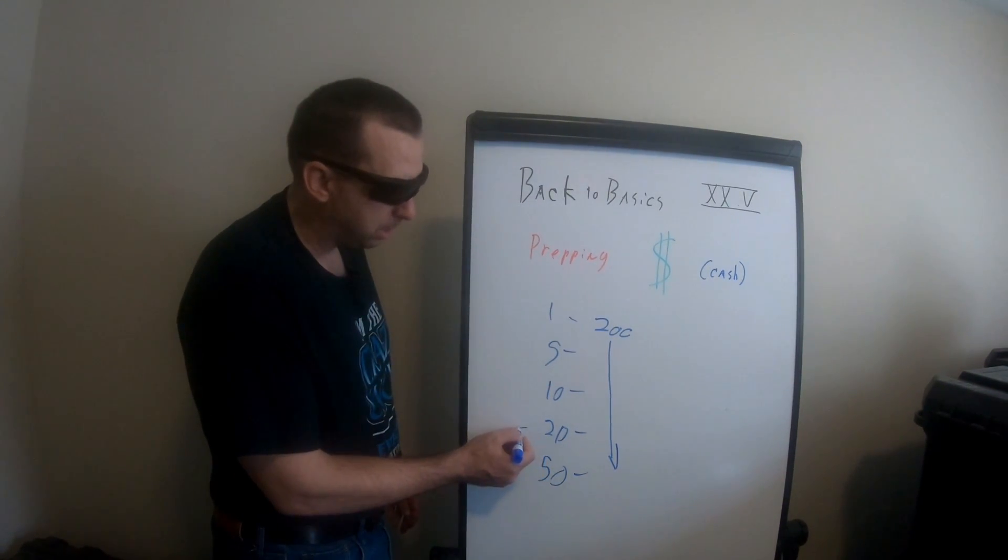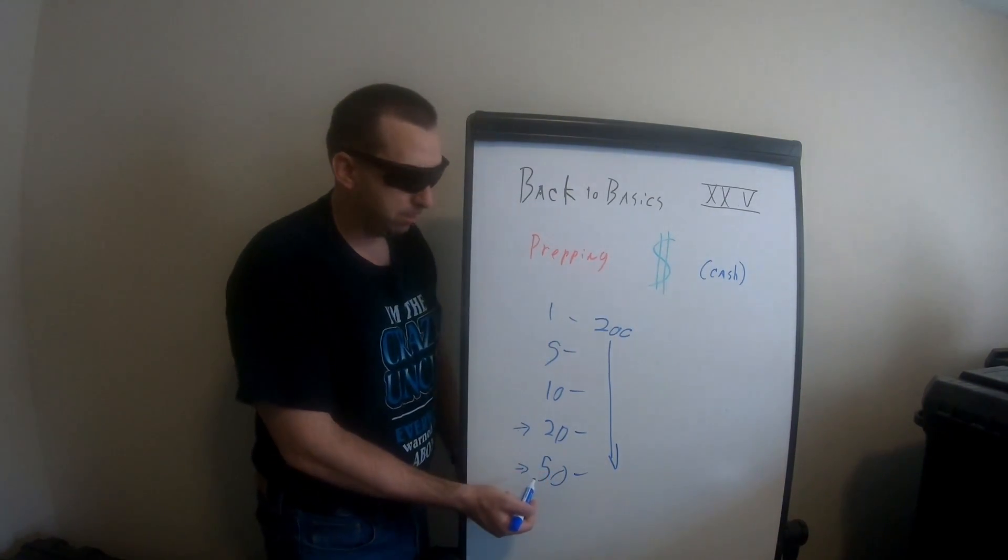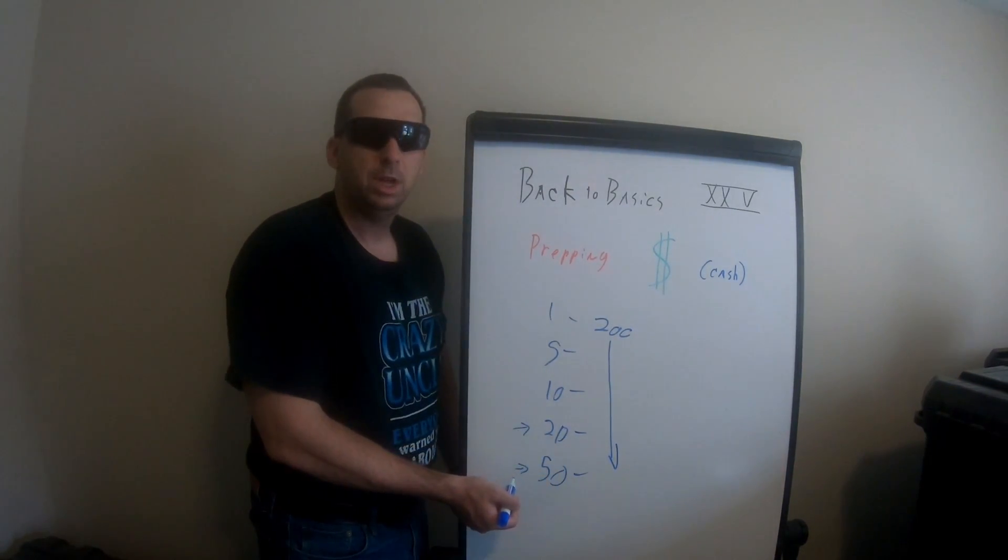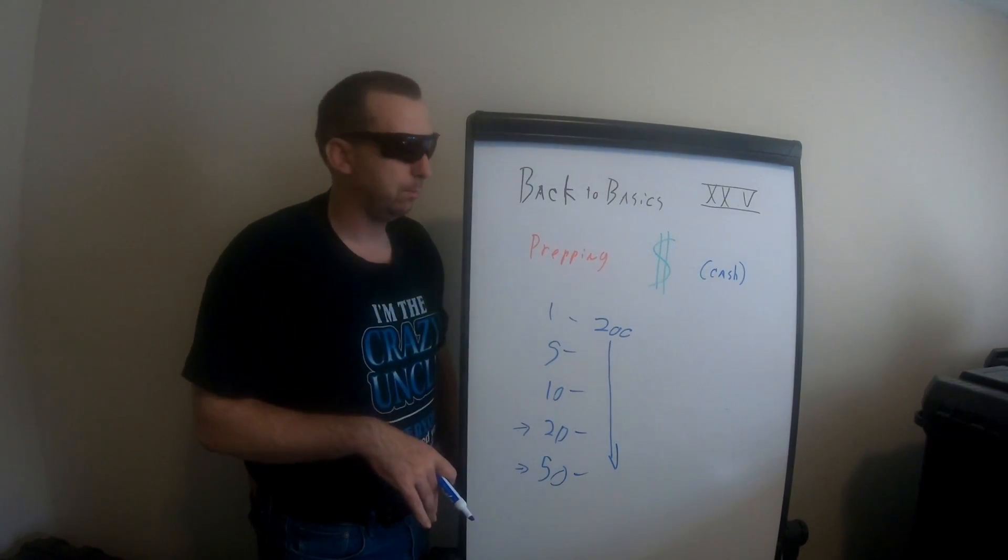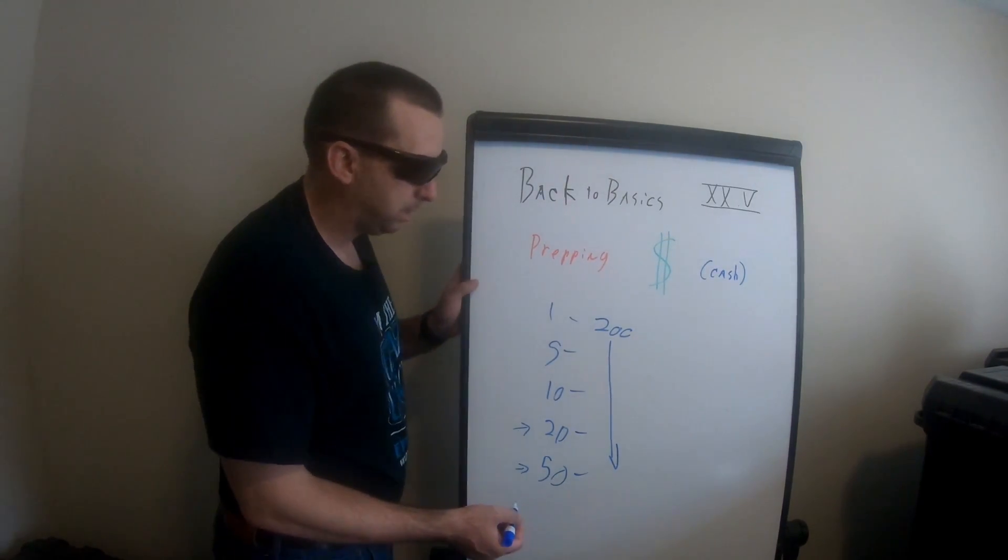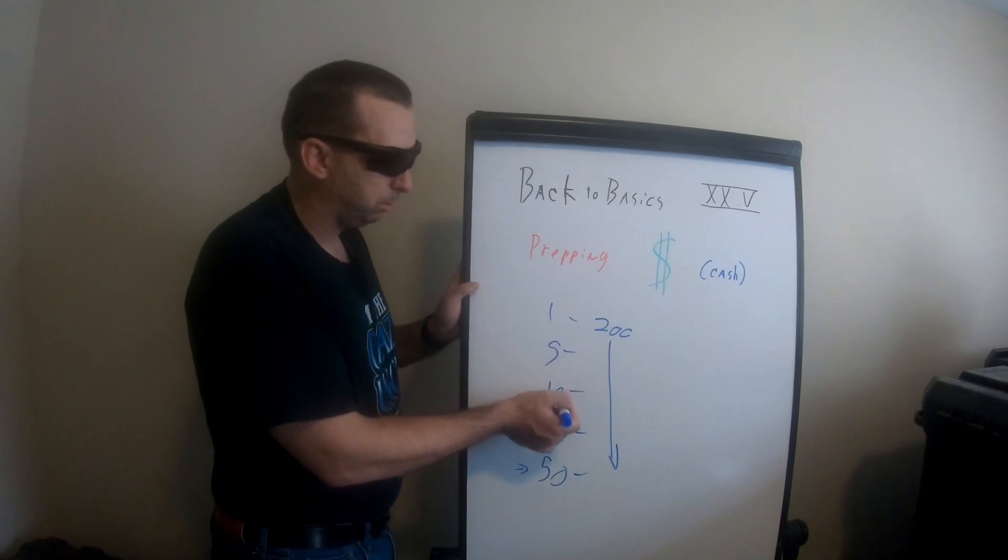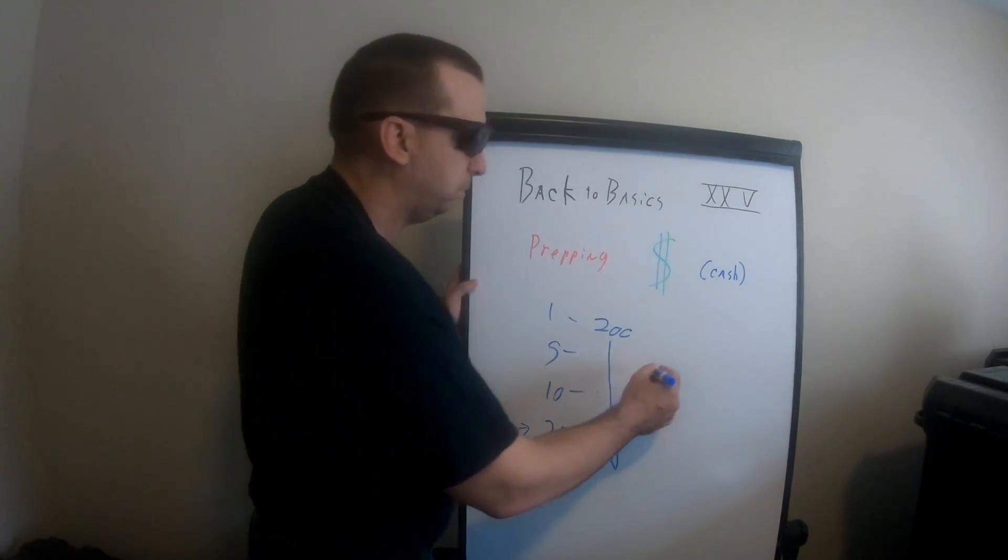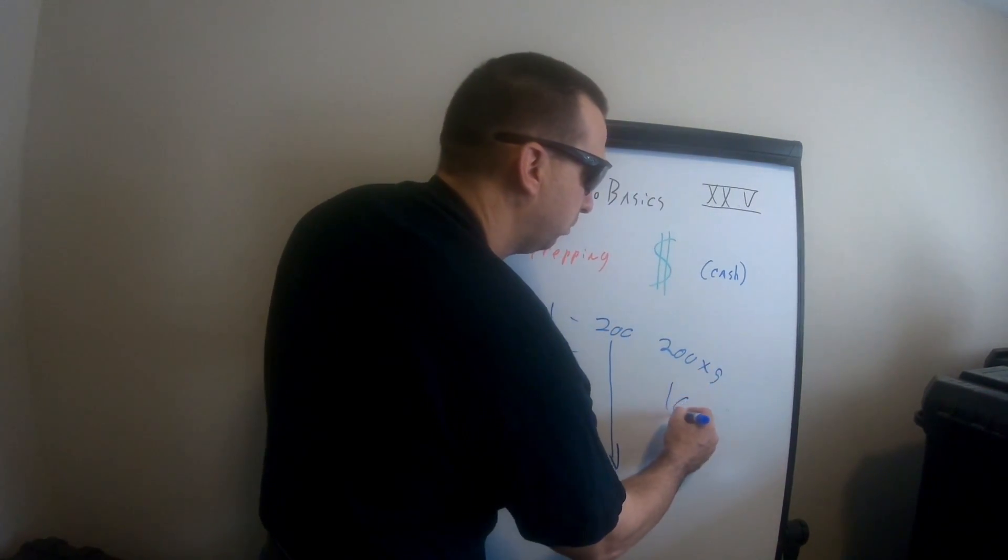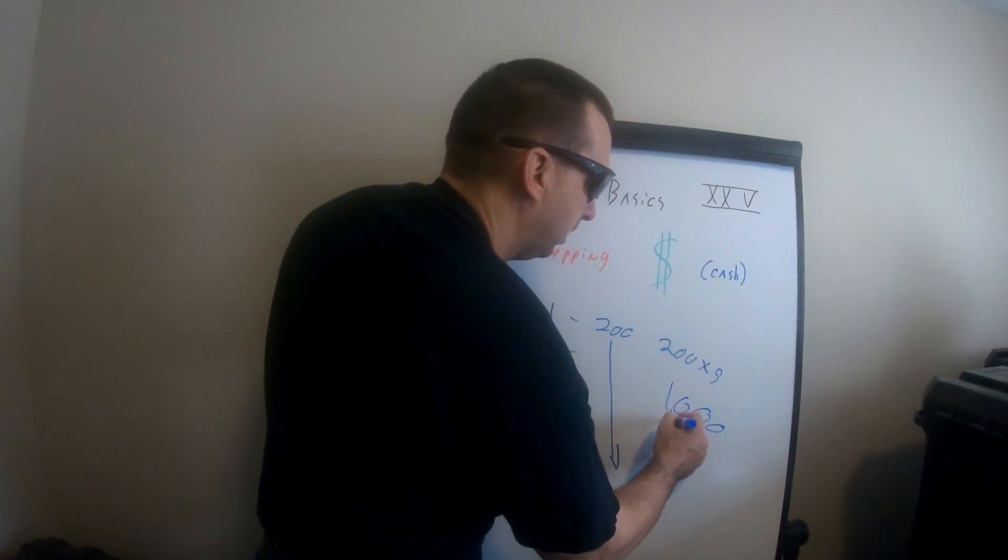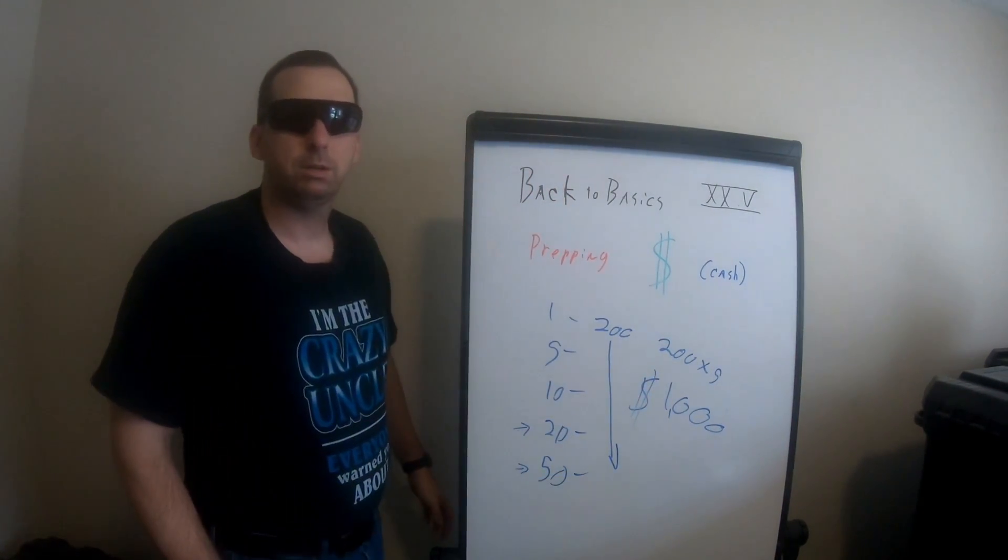For these ones here, this is actually the easiest ones because if you know an ATM that kicks out 20s and 50s, you can just draw it and be good that first month. But here's the thing. The reason for $200 is there's how many of them? 1, 2, 3, 4, 5 of them. What's 200 times 5? Guess what? That's $1,000 right there.